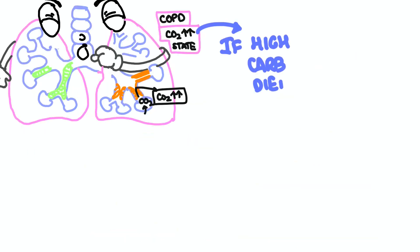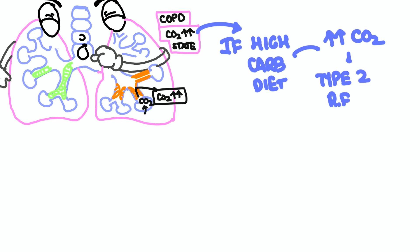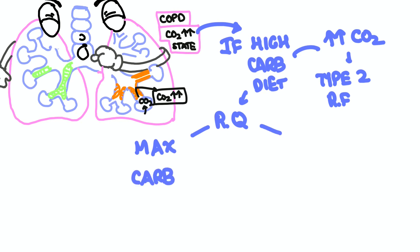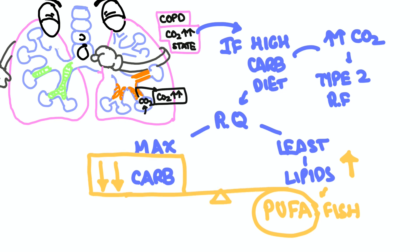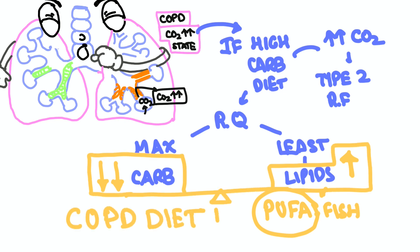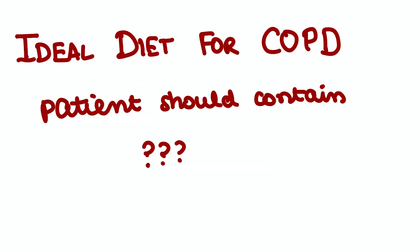If you give a high carbohydrate diet, more carbon dioxide will be loaded in a patient who already has CO2 retention, which might precipitate type 2 respiratory failure. So by applying this concept, we can prescribe a diet that is low in carbohydrates and high in lipids — specifically rich in polyunsaturated fatty acids like fish oils.